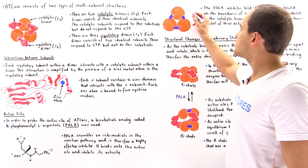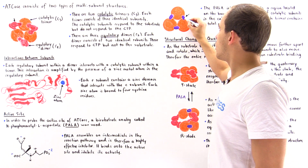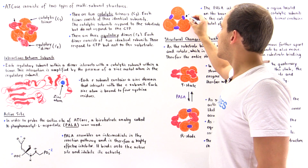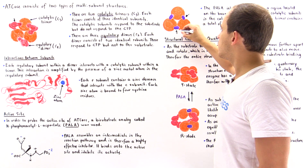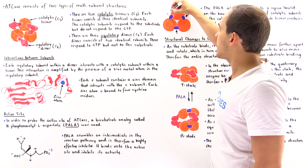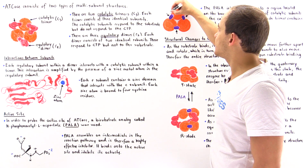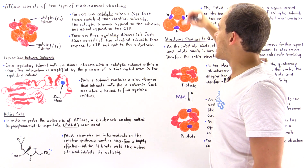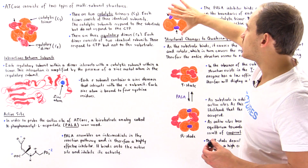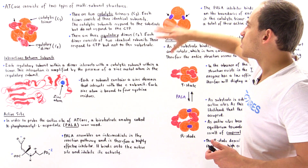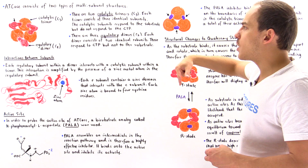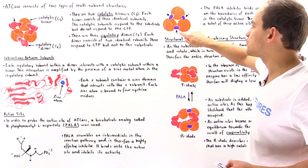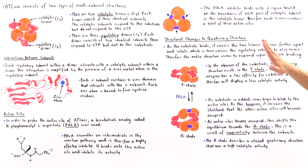The quaternary structure of ATCase consists of six individual active sites. If all those active sites are occupied at a given moment, six of these reactions are taking place simultaneously. PALA can bind onto the first, second, and third active sites of one trimer. If we flip the structure, the other catalytic trimer also contains three of these active sites.